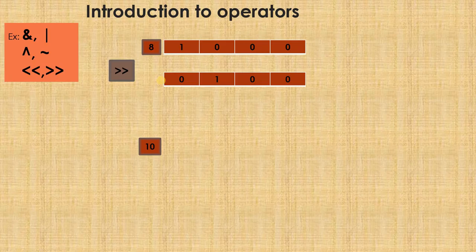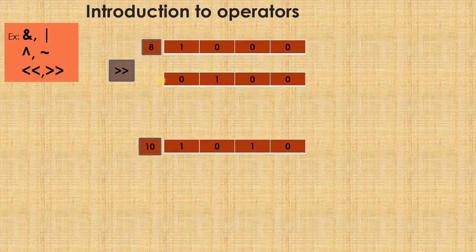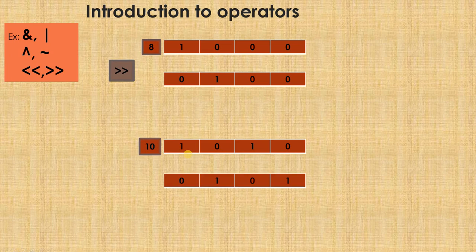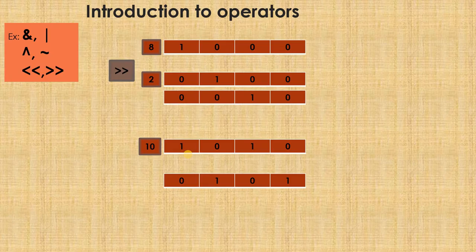In example 2, let us consider 10. How do you represent 10 in binary? It is 1 0 1 0. If I do a right shift, what will happen? This 1 should shift here, this 0 will go out, this 1 will shift here, this 0 will shift here, and a new 0 will be added. That means the number will become 0 1 0 1. This is the first one shift.